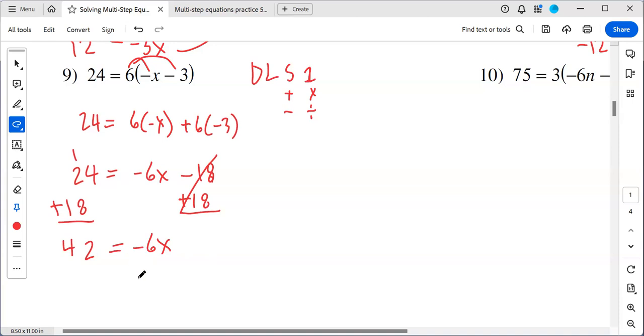Now last but not least, I'm up to getting one of X or one of the variable. Since it's multiplied, I do the inverse again. I divide. So from here, we're going to get negative seven equals to X.